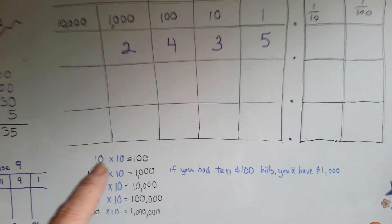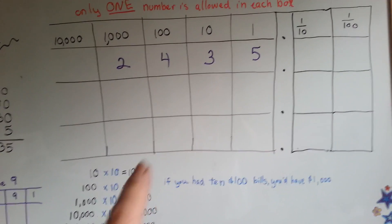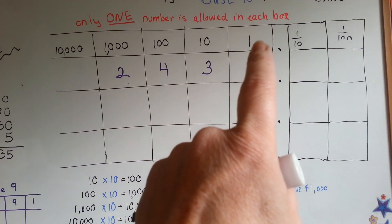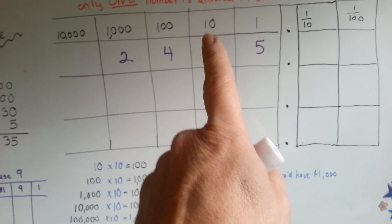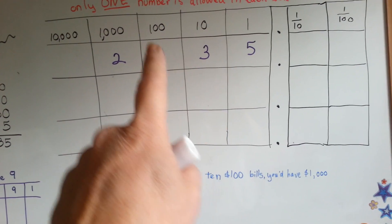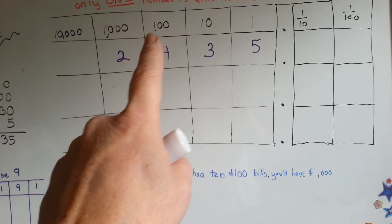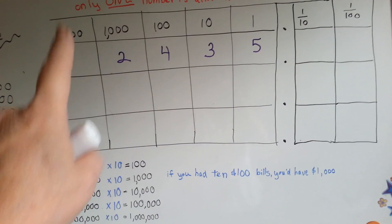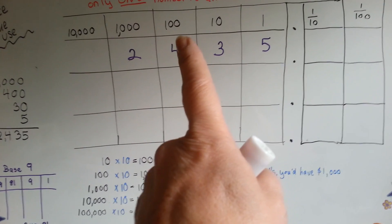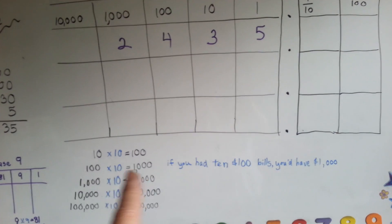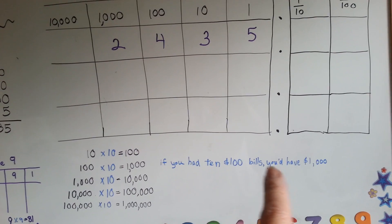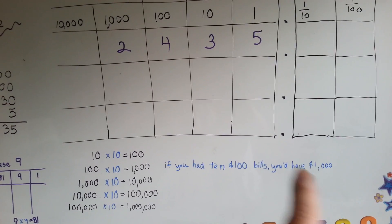Ten times ten is a hundred. So we went from one to ten. One times ten is ten. And now we're going to say ten times ten is a hundred. And we're going to keep multiplying by ten to get the next column. So one hundred times ten is a thousand. If you had ten one hundred dollar bills, you'd have a thousand dollars.